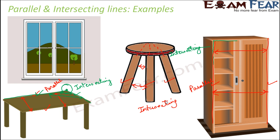Think of the window pane. It is similar to the table or the cupboard. The opposite sides of the window pane are parallel lines. You can look at things around you and decide where you see parallel lines and where you see intersecting lines.